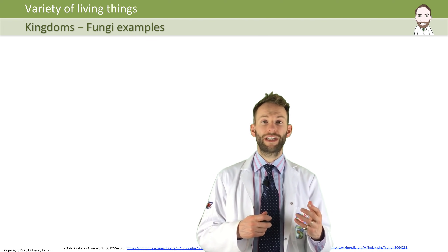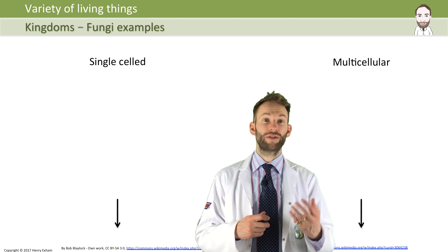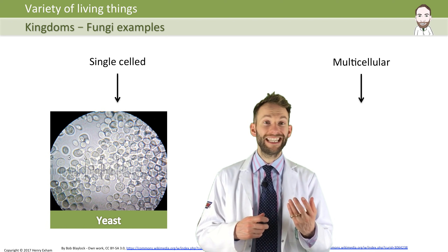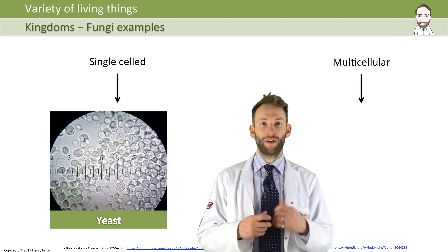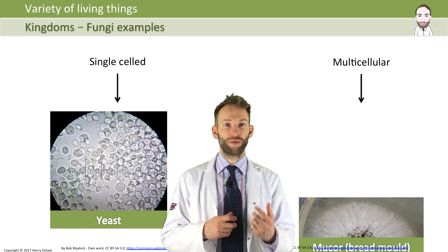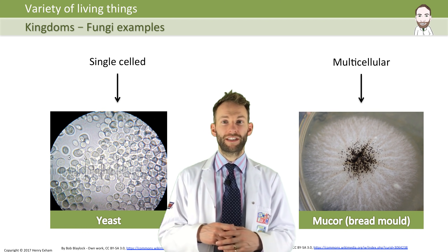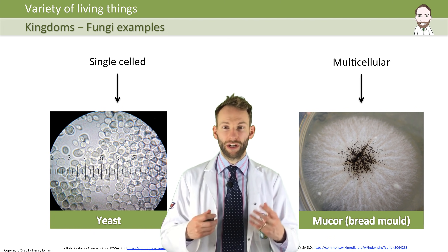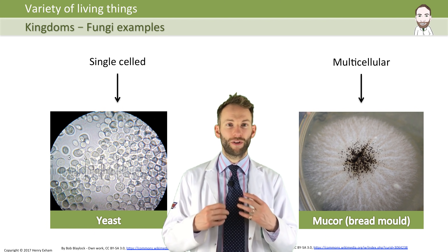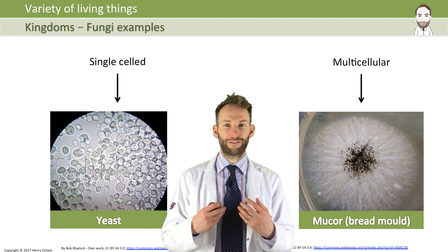You can get single-celled fungi or multicellular fungi. A common example of single-celled fungi is yeast, which is used for baking and brewing. An example of multicellular fungus is mucor, which is the kind of stuff that you get growing on mouldy bread or mouldy fruit.